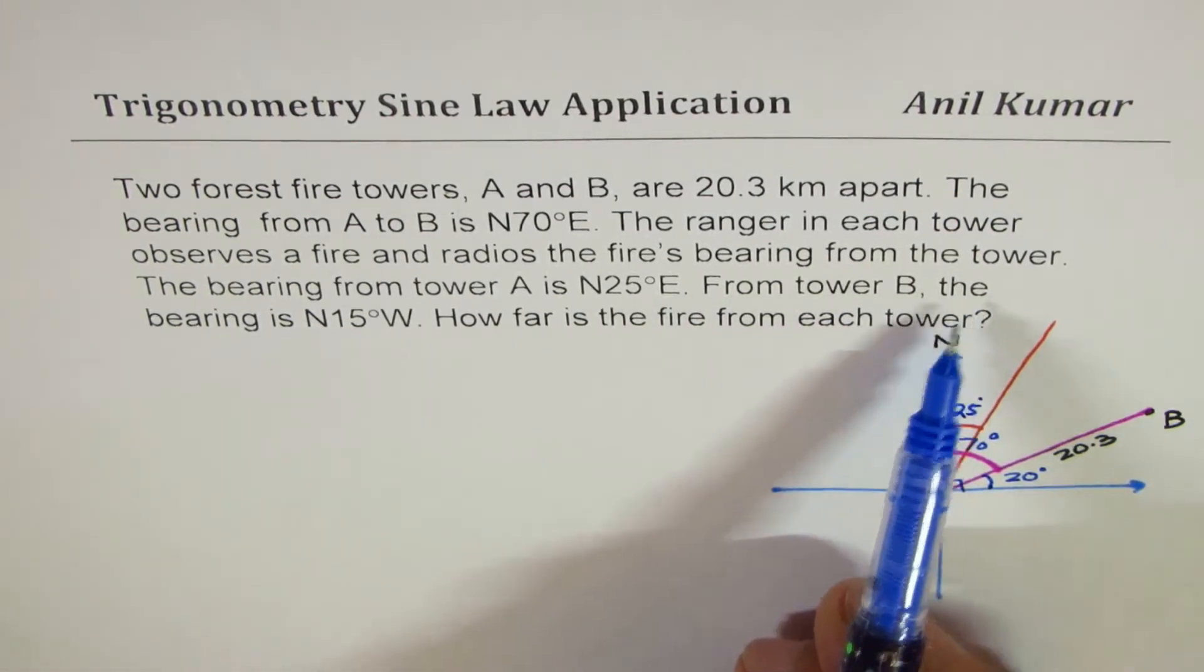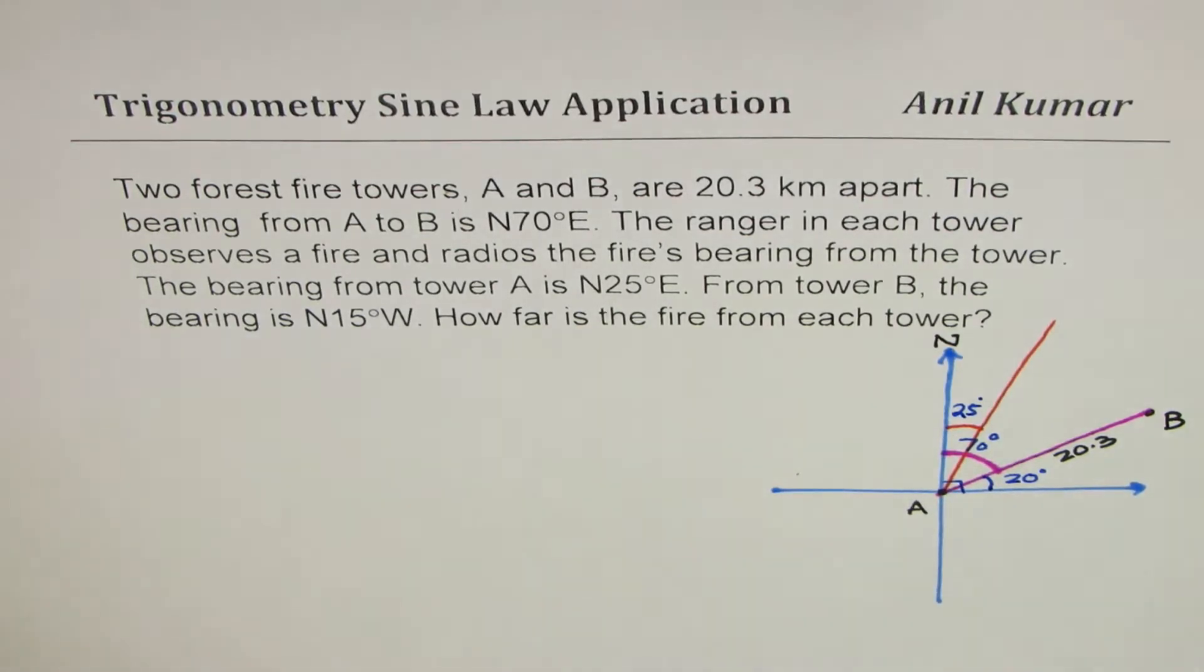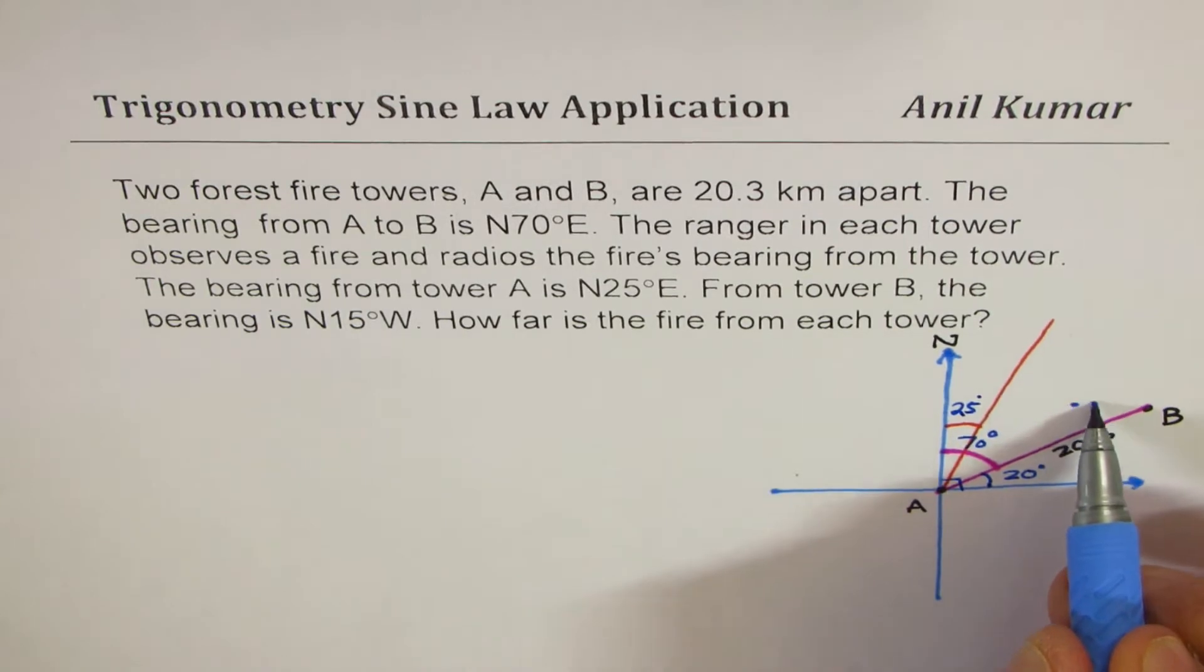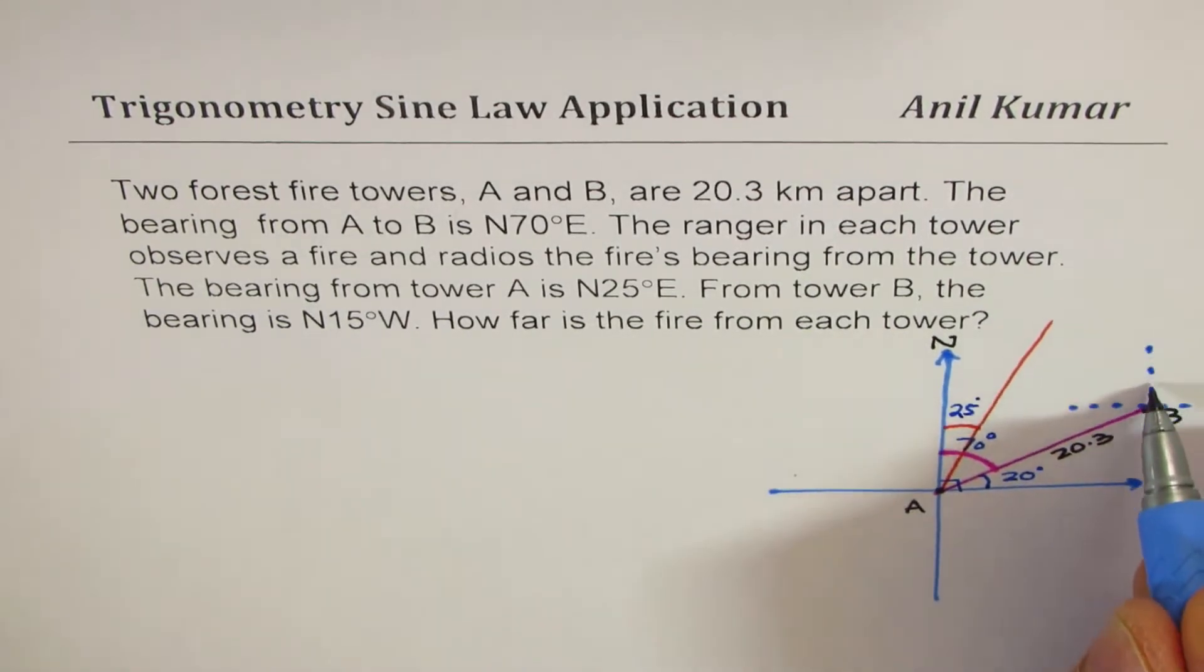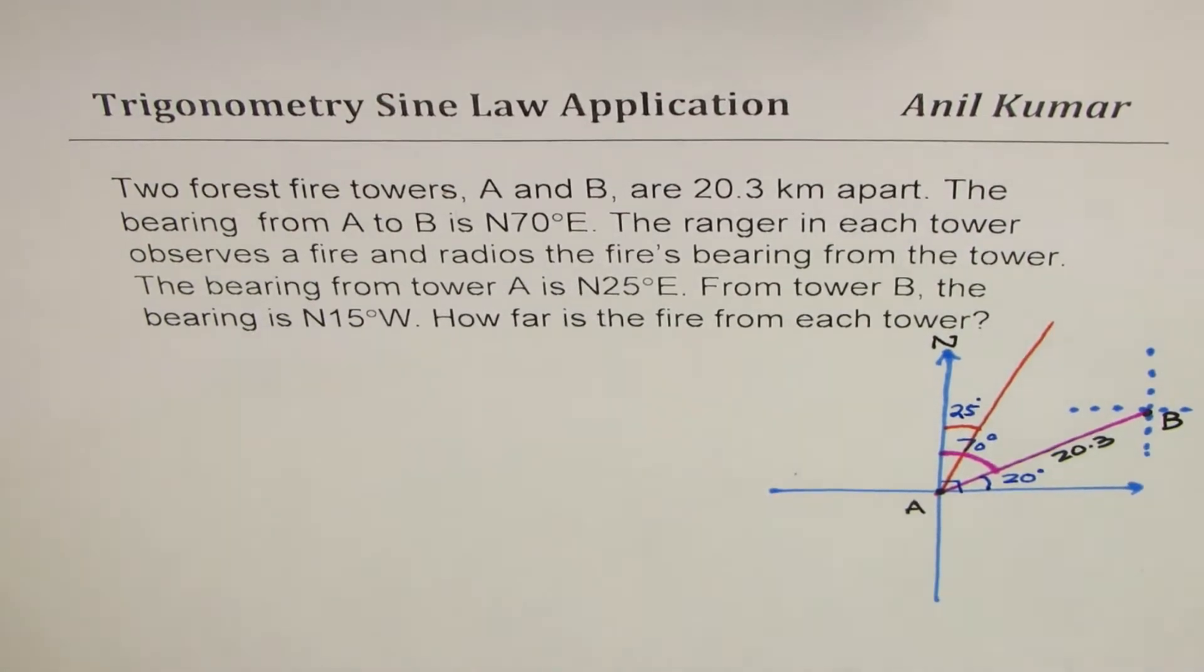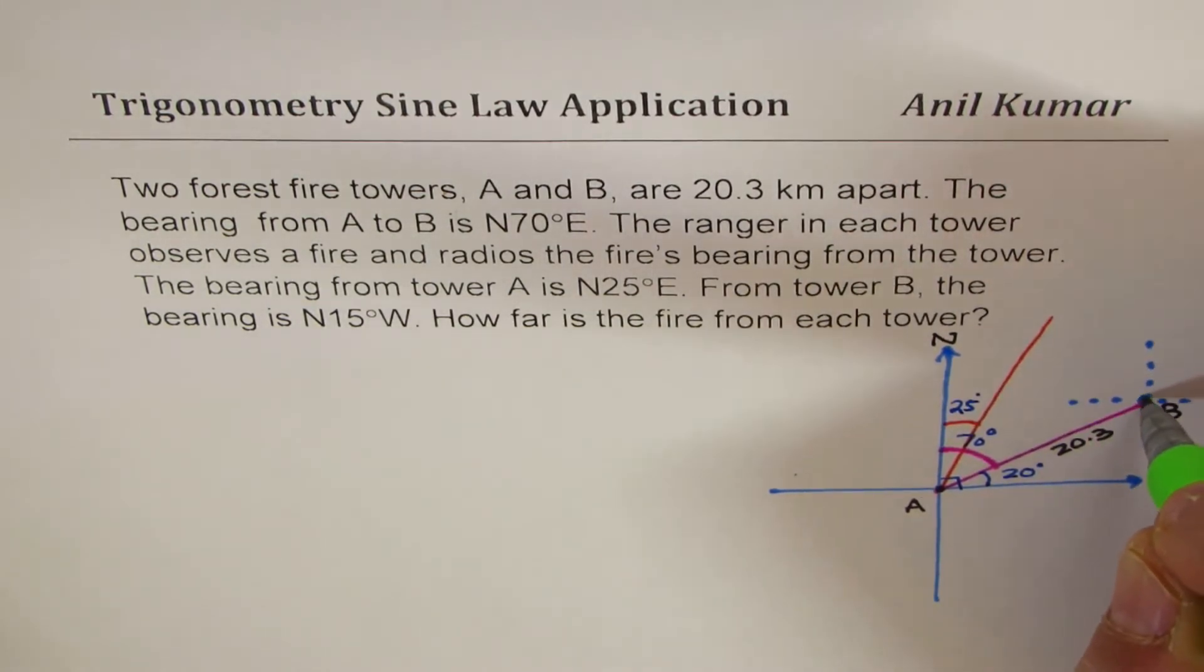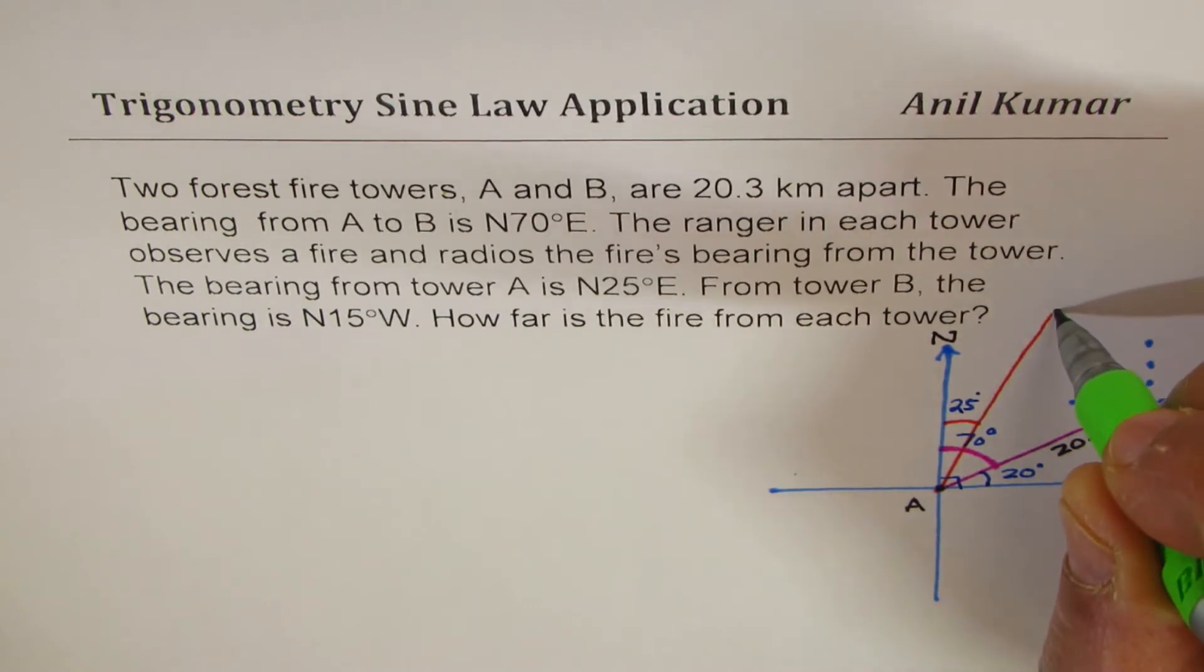From tower B, the bearing is 15 degrees west of north. So to get to 15 degrees, let me sketch another coordinate axis here. And we will now make 15 degrees from north towards west. So let's say, let's assume this is 15 degrees.